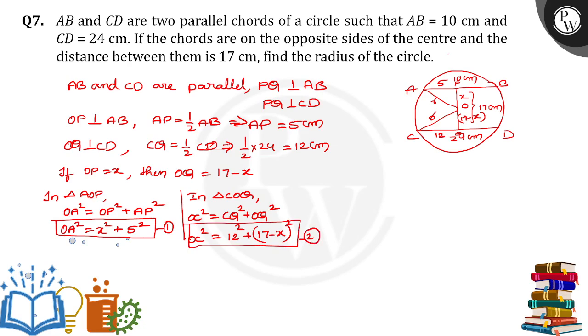We know that OA is equal to OC, so OA square is equal to OC square. X square plus 5 square is equal to 12 square plus 17 minus X whole square. So we will get X square plus 25 is equal to 144 plus 289 plus X square minus 34X.